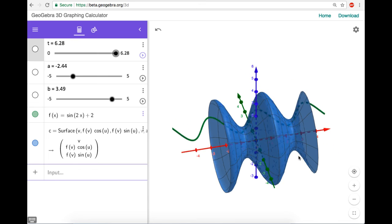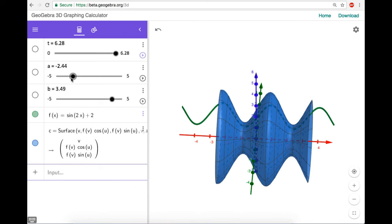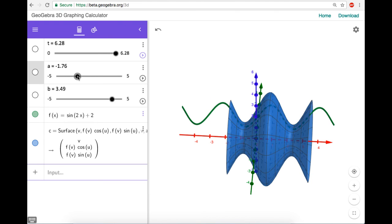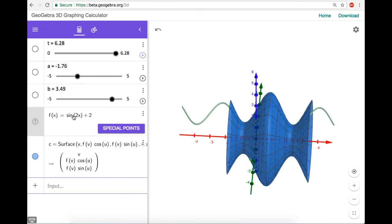So this is all set up, you can change a and b, however you want. You definitely want a to be less than b. We can change the angle, the amount of angle that we're seeing. We can also change the function if we really want to.